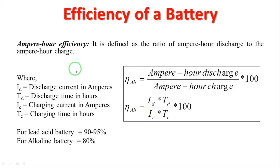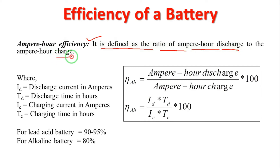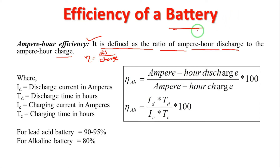Now moving to the second slide: the topic is ampere-hour efficiency. It is defined as the ratio of ampere-hours discharged to ampere-hours charged. Efficiency means output divided by input — charging is the input to the battery, and discharging is the output.